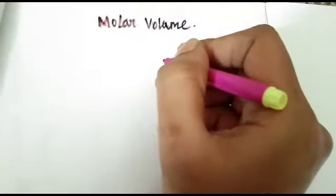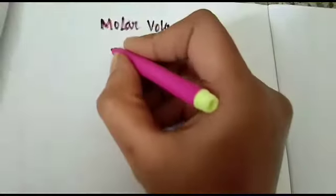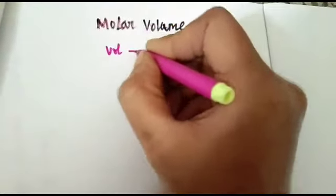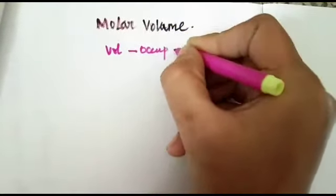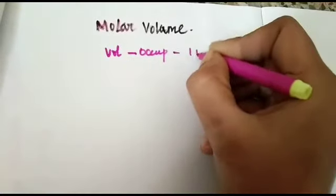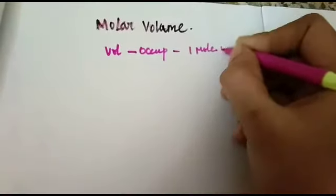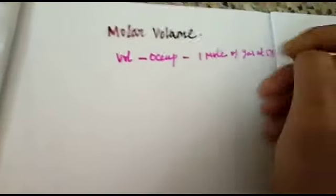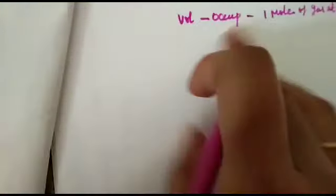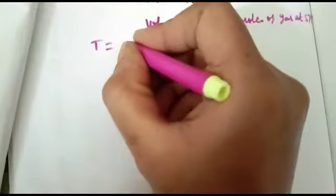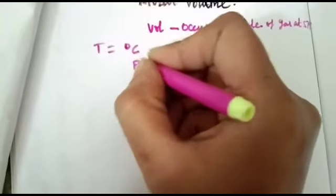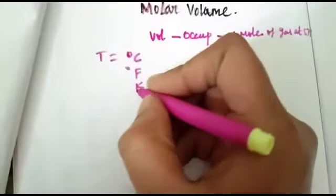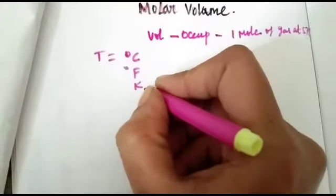Molar volume means volume occupied by 1 mole of gas at STP. Temperature SI units are Celsius, Fahrenheit, and Kelvin. The SI unit for temperature is Kelvin mostly.